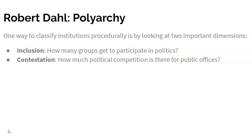The second dimension is contestation — how much political competition is there for public offices? You can measure this in different ways: the number of political parties, the share of the vote of different parties, the difference in vote tally between first and second place. Systems where you have a lot of contestation are presumably more democratic than systems where the government does not have to compete much with other parties for political office.